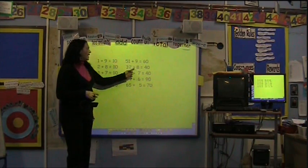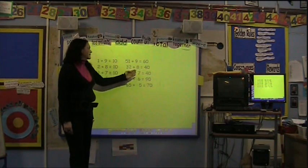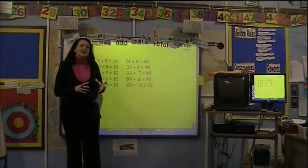If we looked at 32 add 8, children know that 2 and 8 is 10. So 32 add 8 equals 40.